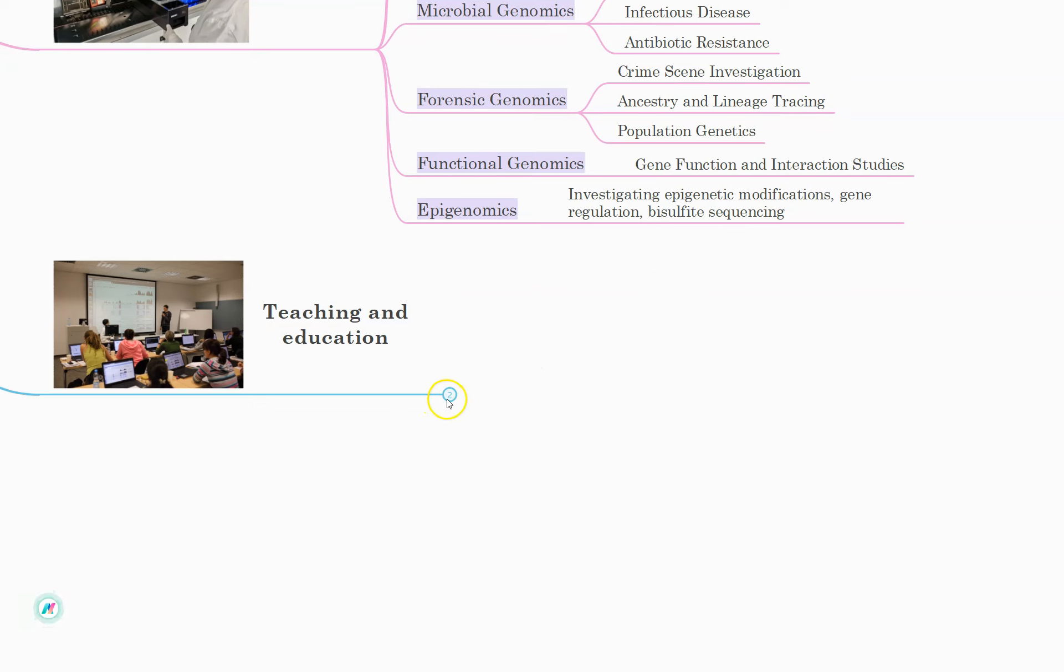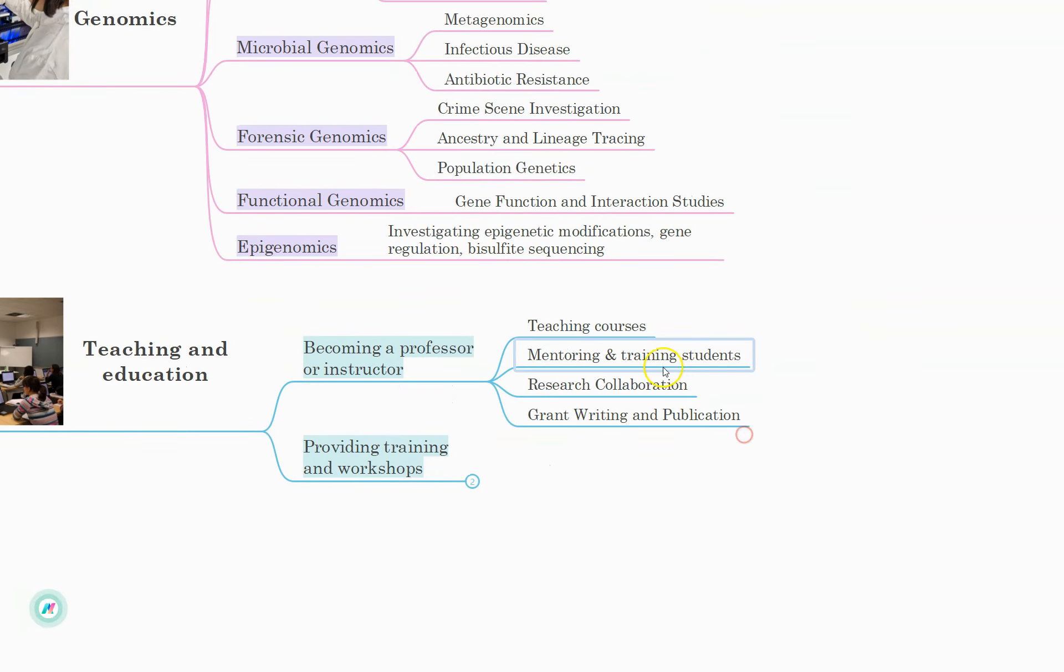Last but not least, another booming area where NGS is also thriving is in teaching and education. Where you can become a professor or instructor, teaching courses on NGS technologies, genomics and bioinformatics. Mentoring and training students on NGS data analysis, research collaborations, leading multidisciplinary research projects which utilize NGS. And grant writing and securing funding, also publishing findings in scientific journals.